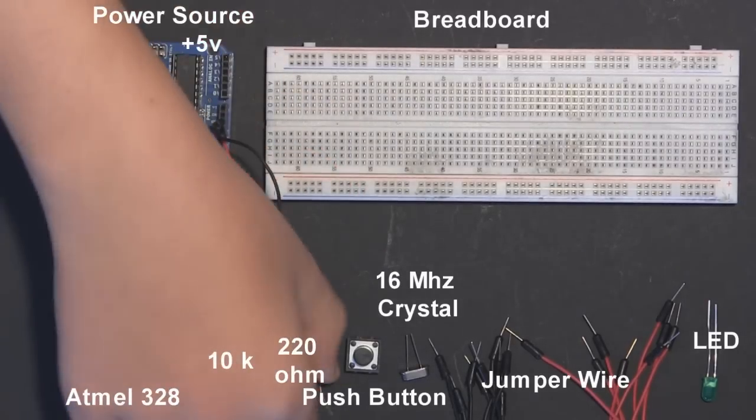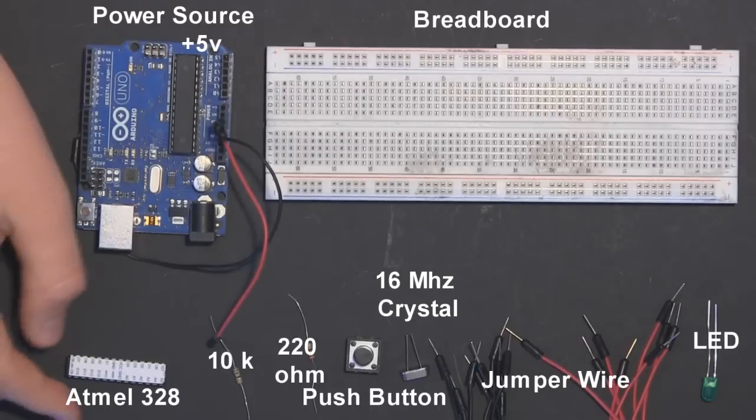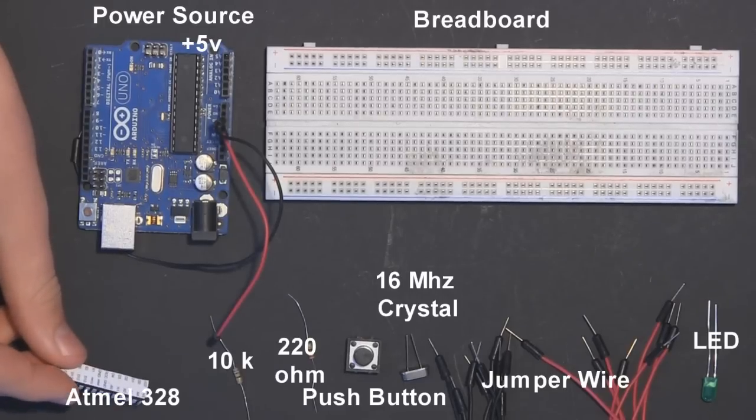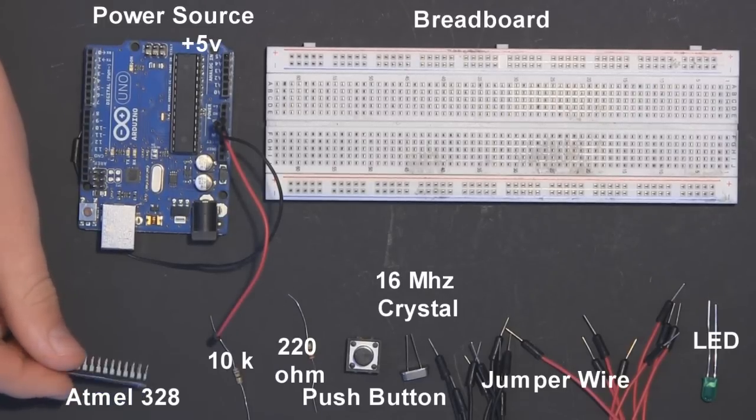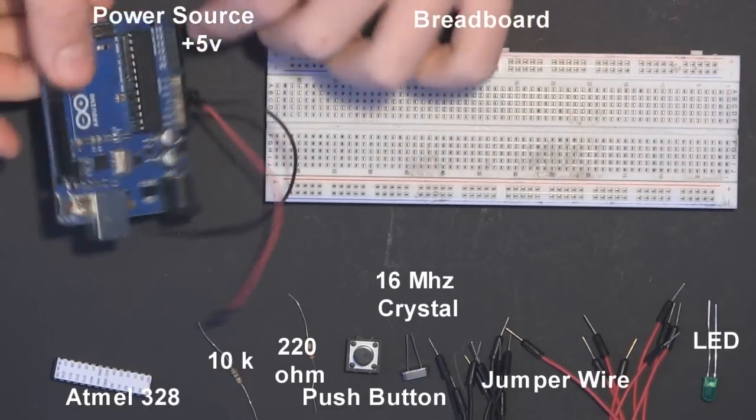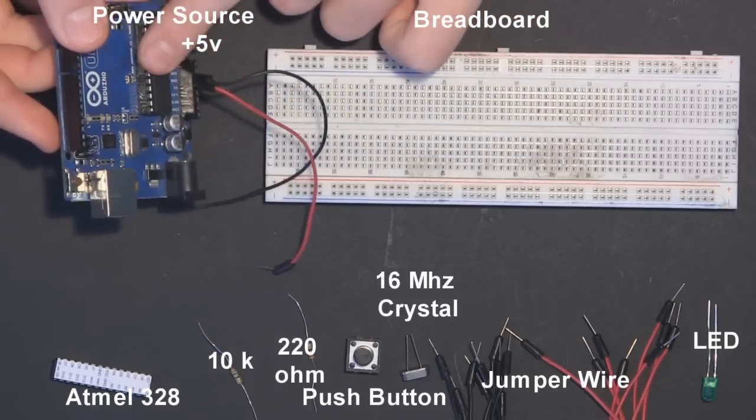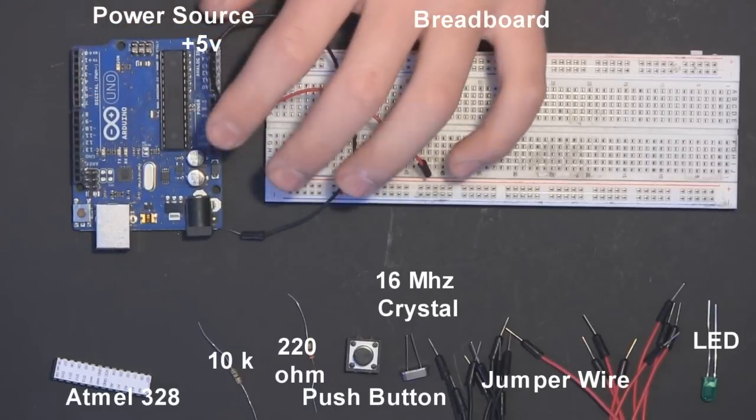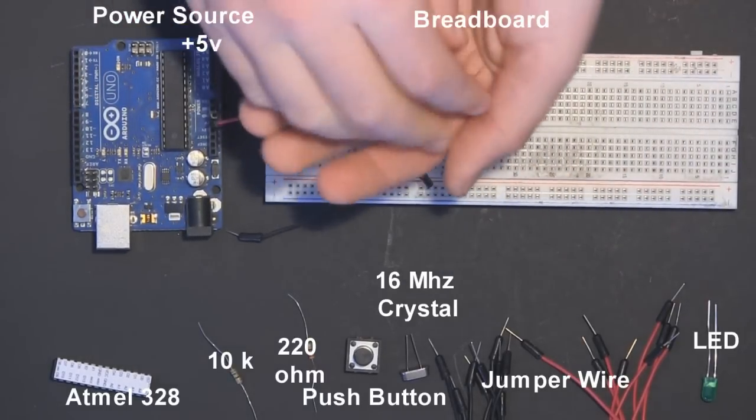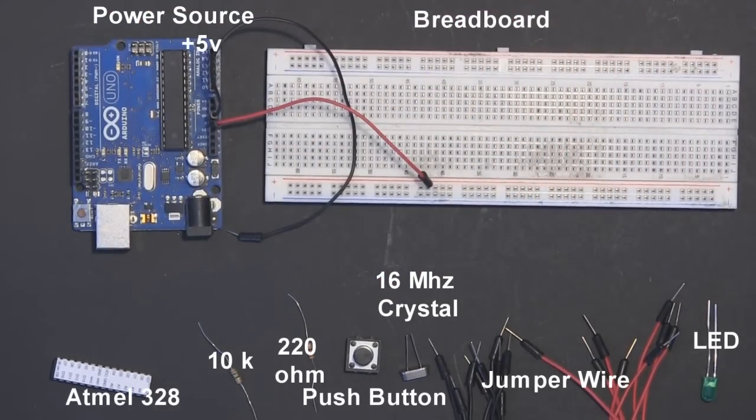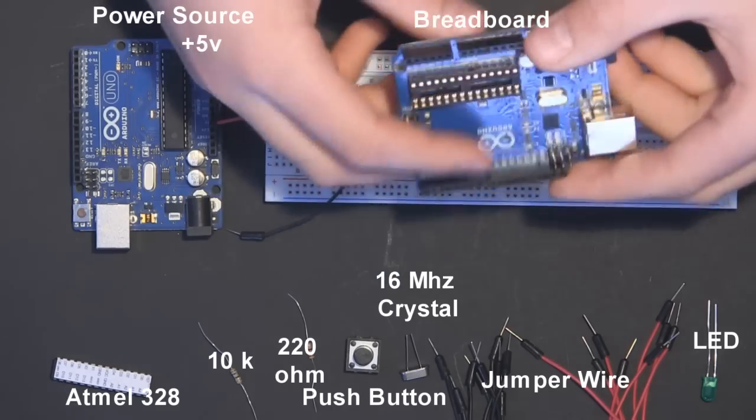You will also need a 220 ohm resistor to go along with the LED. Next you will need an Atmega 328—this will be our central IC chip of this project today. Lastly you'll need a breadboard, and as a power supply I am using my Arduino Uno with its onboard regulated 5 volt and ground power supply. The reason we're not building our own power supply today with voltage regulators and capacitors is because we're still early on in the tutorial series and we want to stick with the basics.